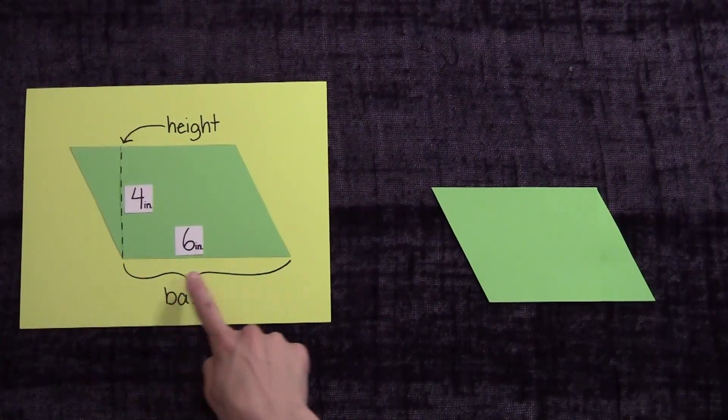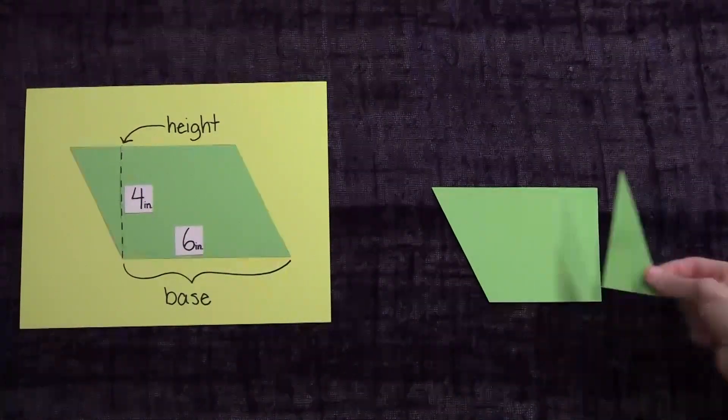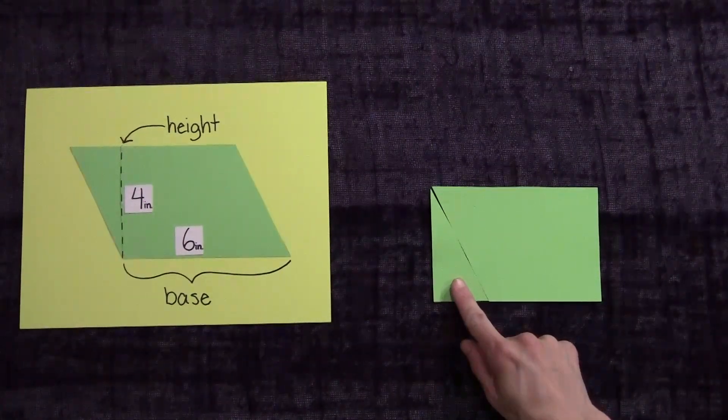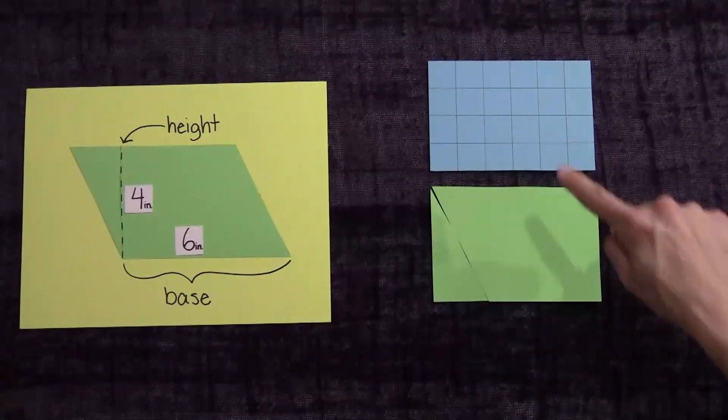Area equals base times height. If you cut off this piece and move it over here, you can see we have a rectangle with a length of 6 and a height of 4. The areas of both the rectangle and this parallelogram are the same.